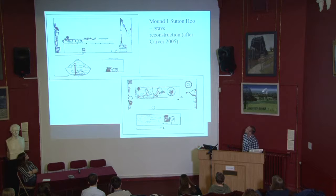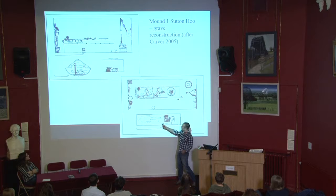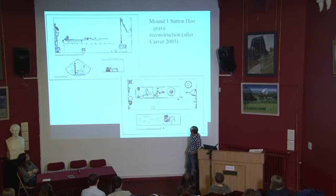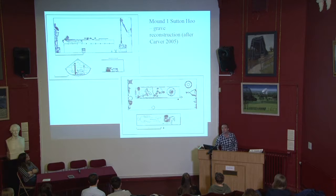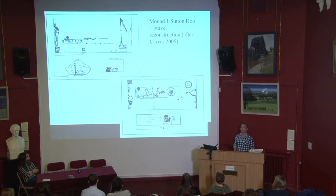This is the Mound One Sutton Hoo grave reconstruction after Martin Carver in 2005. Inside the boat is where the body would be, along with weaponry, shield, hammer, helmet, sword, and bowls. He had things from all over — from Francia, the Germanic lands, the Byzantine. Things from everywhere showed he wasn't just a local guy; he was a man of the world, or at least the trade said so. And he's buried in a boat.